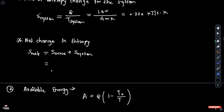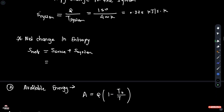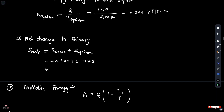The net change of entropy S_net is equal to S_source plus S_system: minus 0.125 plus 0.375, which equals 0.25 kJ per second Kelvin.